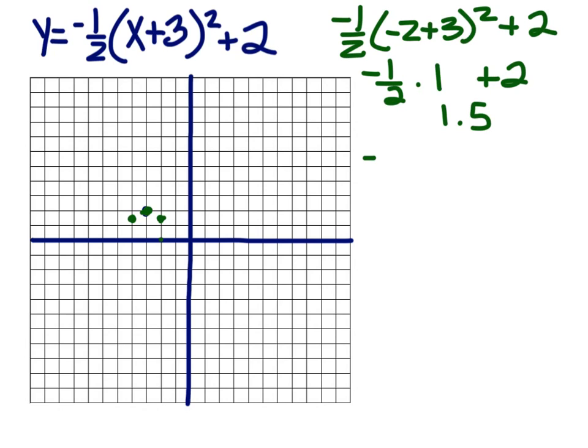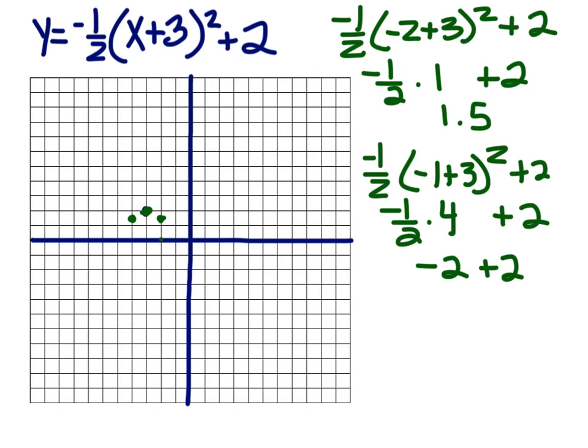Okay, we could plug in a negative 1. So negative 1 half times negative 1 plus 3, squared plus 2. Negative 1 plus 3 is 2, squared is 4. Bell again. Aren't y'all excited? Negative 1 half times 4 is negative 2, plus 2 is 0. So here. And it mirrors across to here. And that's 5 points, so that's enough.